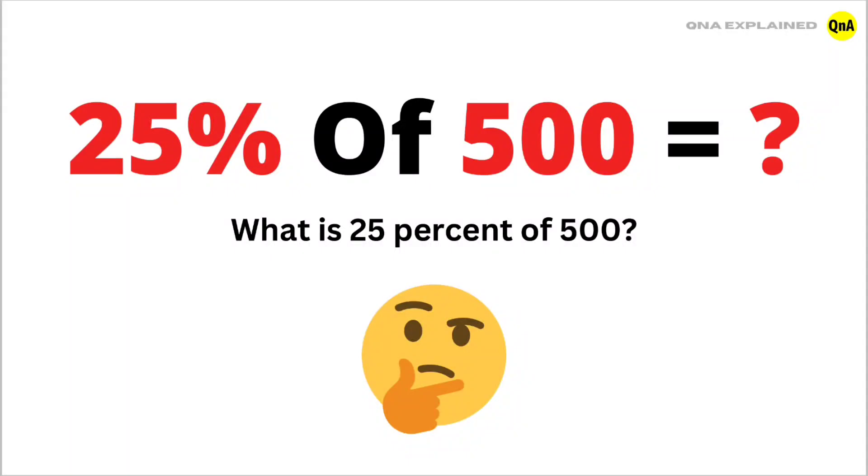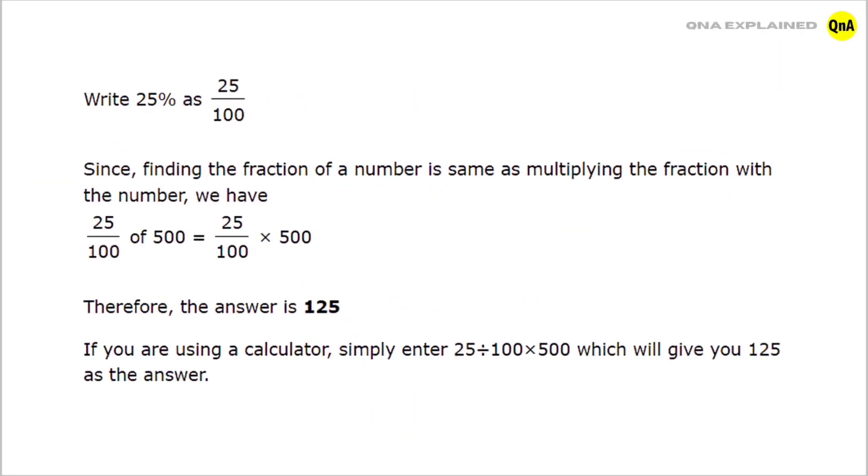What is 25% of 500? Write 25% as 25 upon 100. Since finding the fraction of a number is same as multiplying the fraction with the number, we have...